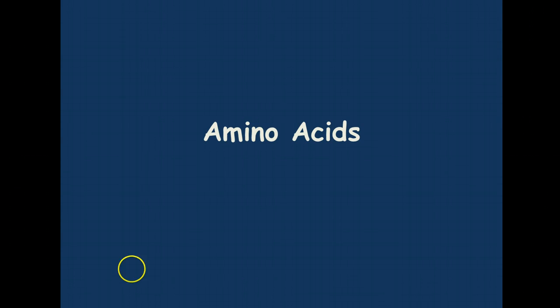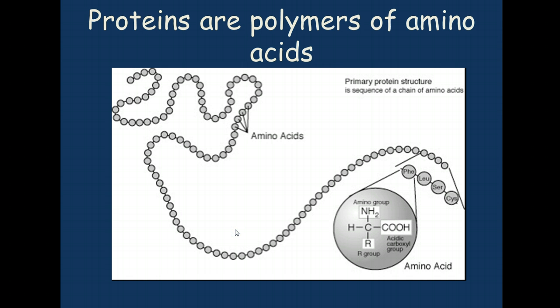Here is our Bio 11 lecture on amino acids and peptide bonds. Proteins are polymers of amino acids — just a long chain of amino acids — in exactly the same way that cellulose, starches, and glycogen are long chains of glucose.